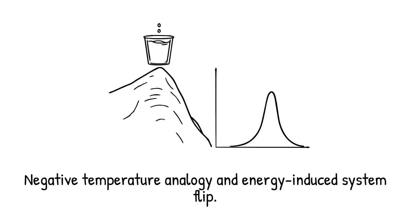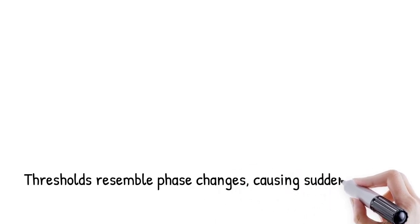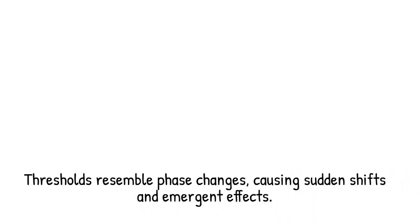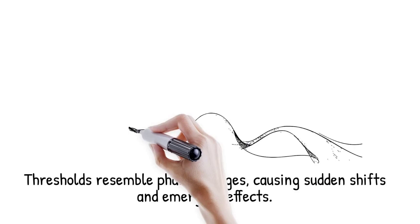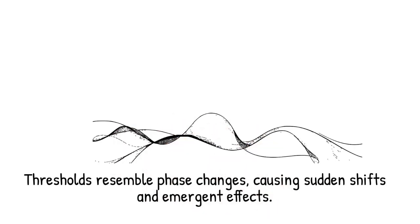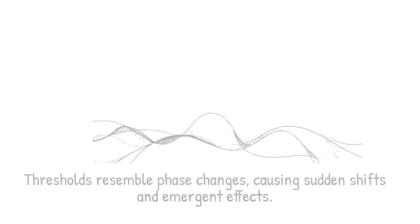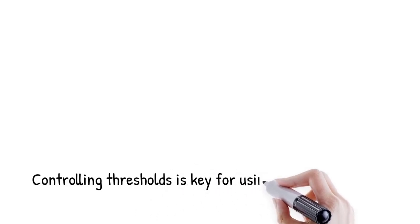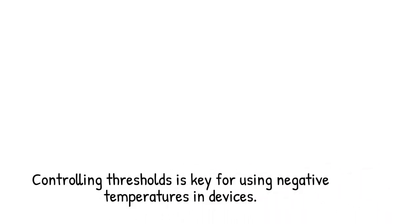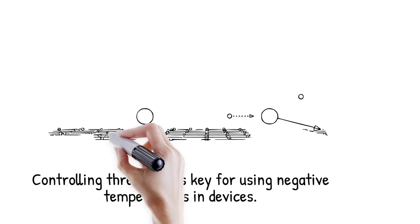As more energy is added, the system abruptly flips from a normal distribution to an inverted one once a critical pumping rate or level is reached. This threshold behavior mirrors first-order phase changes, where a tiny extra push causes a sudden macroscopic shift, such as water boiling. Beyond this point, many emergent effects appear: dramatic changes in conductivity, sudden bursts of coherent emission, or abrupt magnetic reversals. Recognizing and controlling these thresholds is crucial for harnessing negative temperature effects in devices.